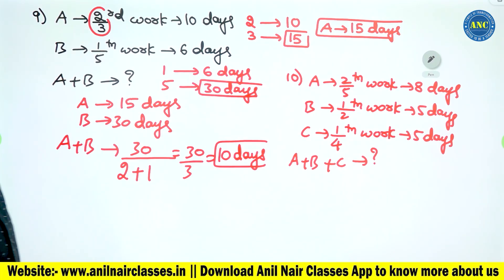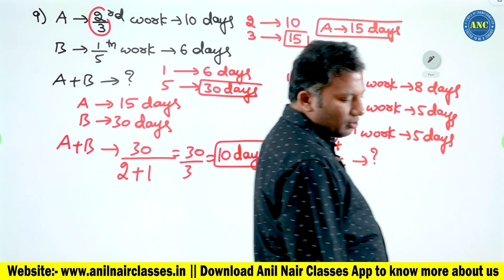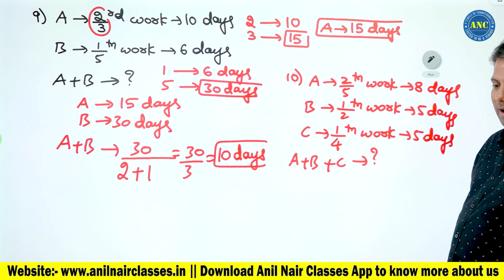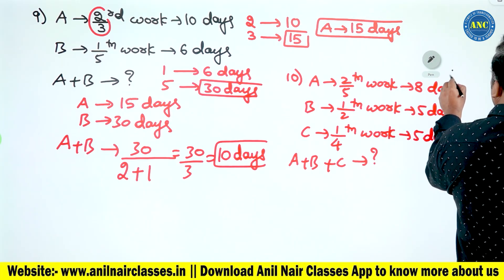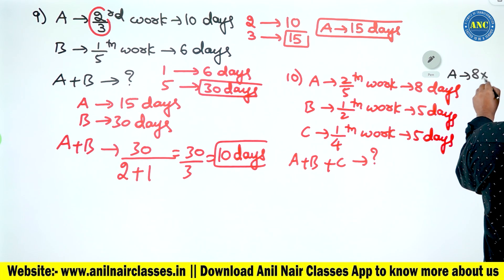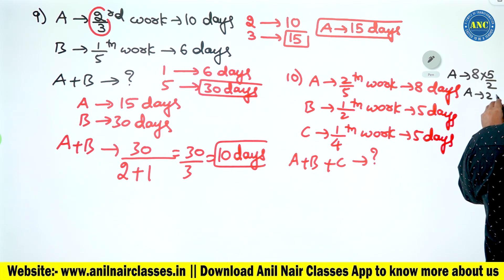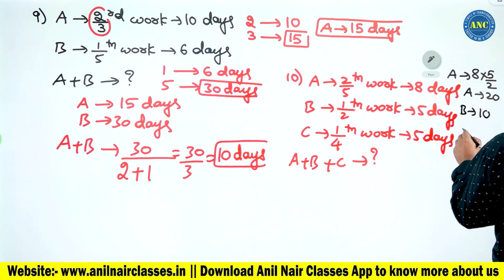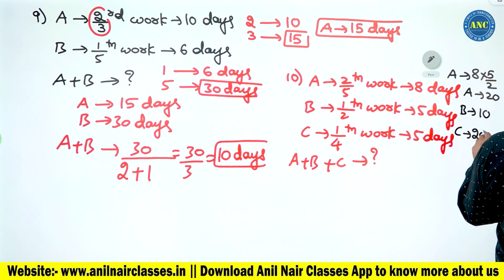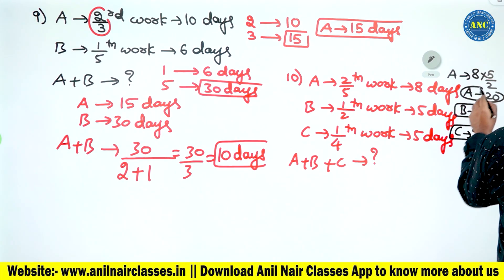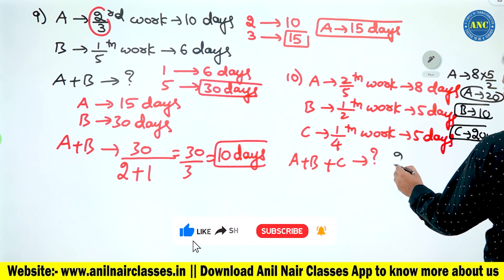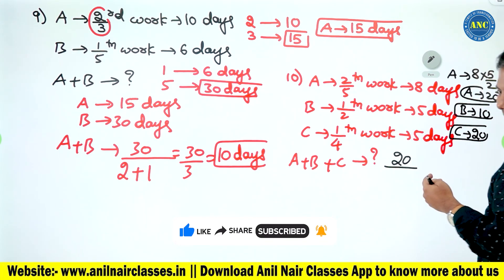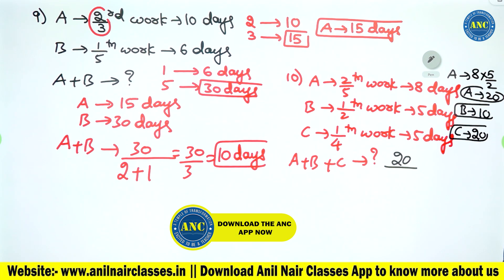To convert: two-by-five becomes reverse five-by-two. A: eight into five-by-two equals 20 days. B: five into two-by-one equals 10 days. C: five into four-by-one equals 20 days. So A = 20 days, B = 10 days, C = 20 days.